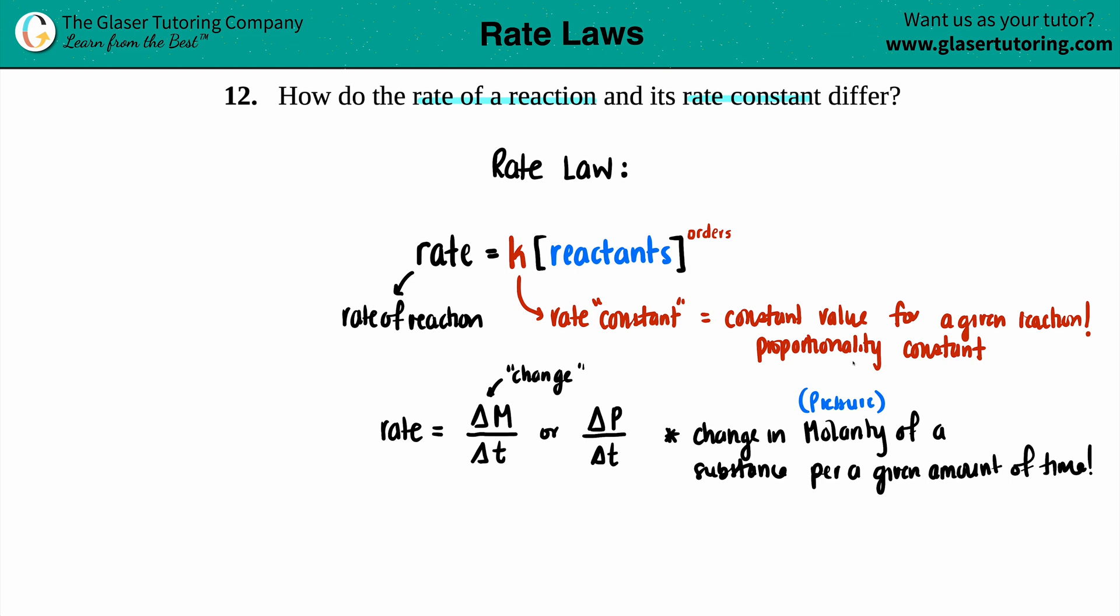They call this the proportionality constant, right. And basically the only thing that is going to change the rate constant is not the concentrations but the temperature. So a rate constant will only change given different temperatures. But if you're at the same temperature and you're doing trials and experiments, that k value, the rate constant, is going to be the same regardless of what your concentrations are of your certain reactants.